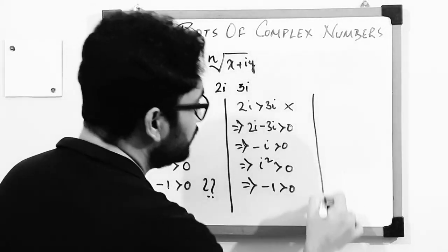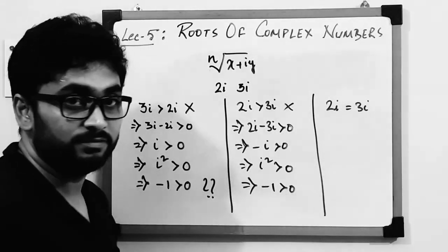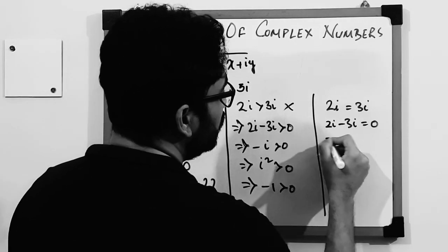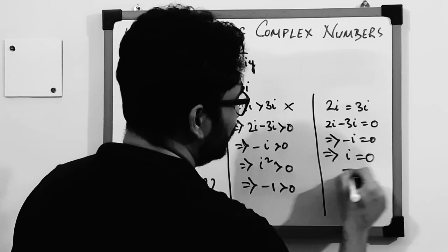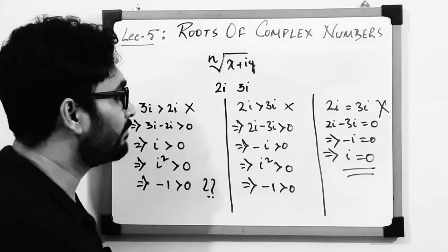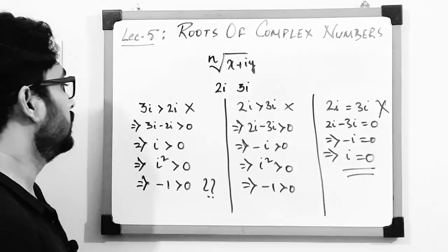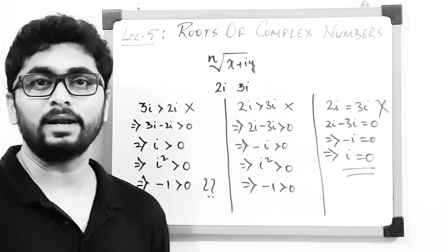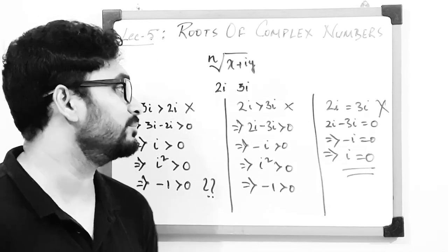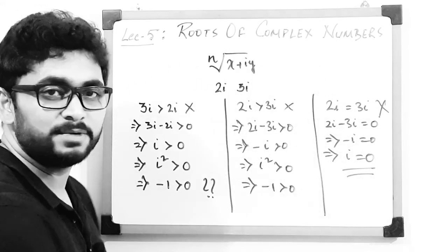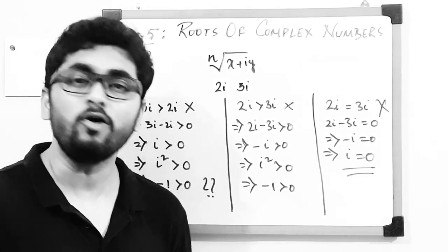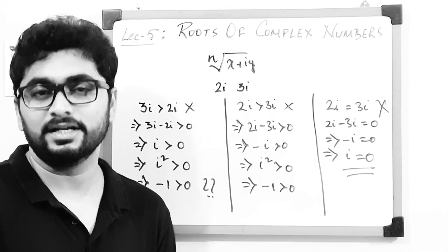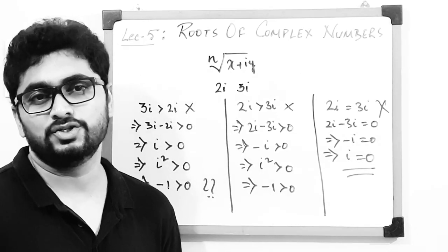The only remaining possibility is 2i = 3i, which gives 2i − 3i = 0, so −i = 0, meaning i = 0 — clearly irrational. So the rule of trichotomy cannot be applied to complex numbers. The ordering and arithmetic related to ordering of real numbers is not applicable for complex numbers; we cannot compare two complex numbers as greater or smaller.